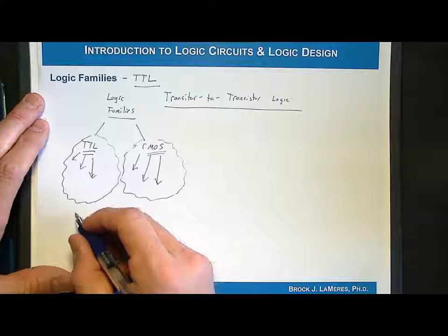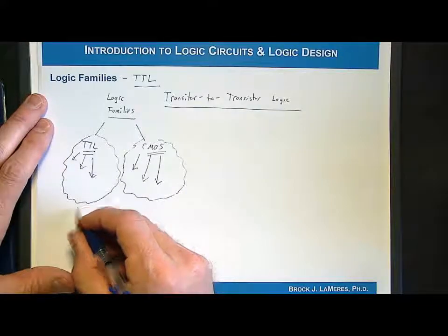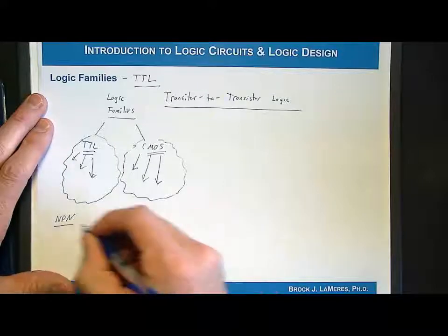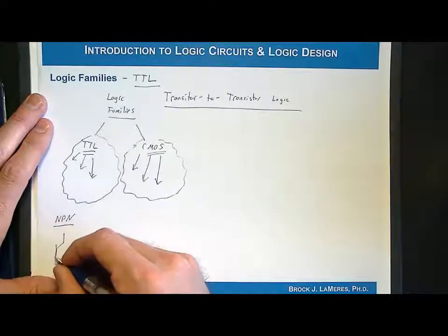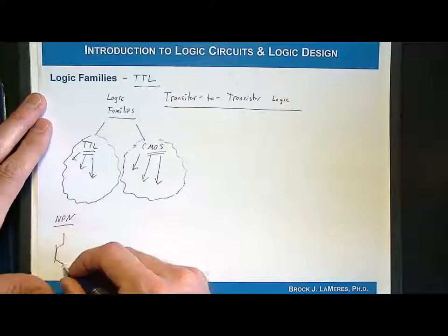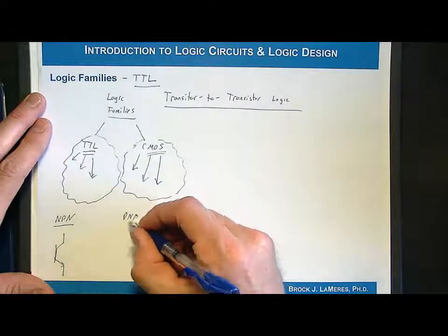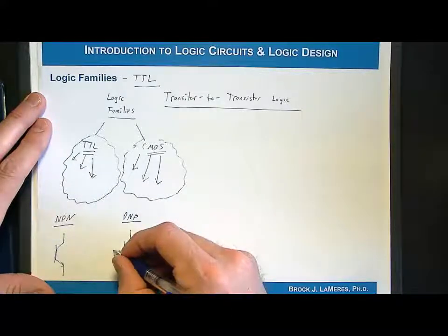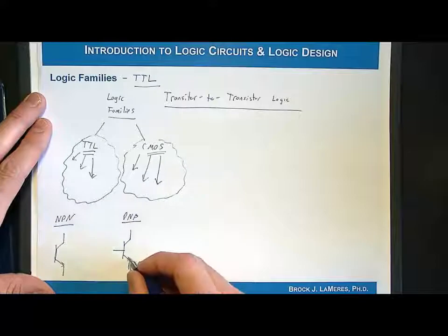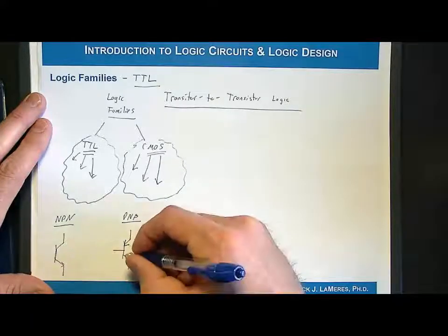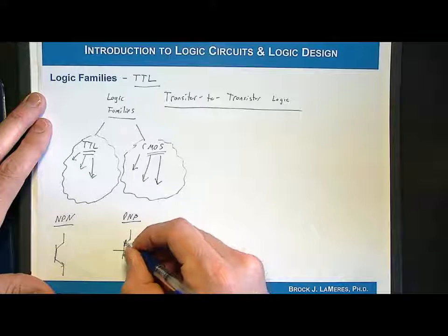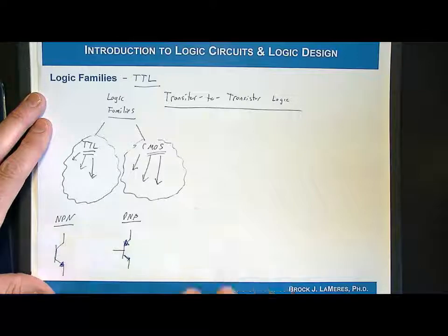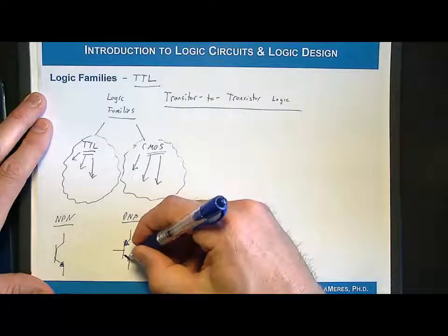The first one is an NPN transistor with a symbol like this. You also have a PNP transistor which has a symbol that looks like this. The arrow is on the top for PNP. I'll fill them in so it's clear where the arrow is. The location of the arrow tells you whether it's an NPN or a PNP transistor.